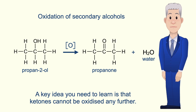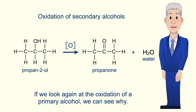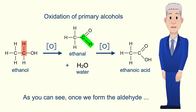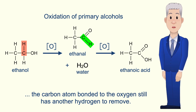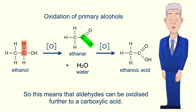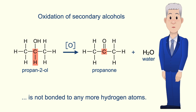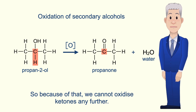A key idea you need to learn is that ketones cannot be oxidized any further. If we look at the oxidation of a primary alcohol we can see why. During oxidation we remove hydrogen from the carbon atom bonded to the alcohol group. Once we form the aldehyde, the carbon atom bonded to the oxygen still has another hydrogen to remove, so aldehydes can be oxidized further to a carboxylic acid. However, in a ketone the carbon atom bonded to the oxygen is not bonded to any more hydrogen atoms, so we cannot oxidize ketones any further.